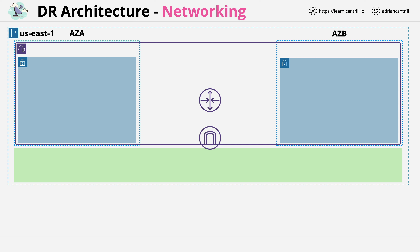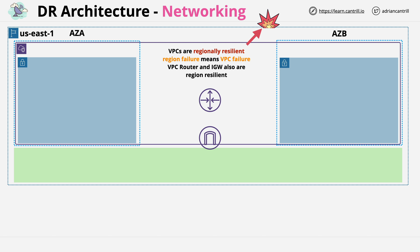VPCs are regionally resilient — they're created in a region and it would take a region failure to totally impact the service provided by that VPC. Certain gateway objects in the VPC, such as the VPC router and internet gateway, are also regionally resilient, so only a complete region failure could impact their service. If individual availability zones fail, the VPC as a whole and these gateways will continue functioning within the working availability zones. Subnets running within that VPC are different though.